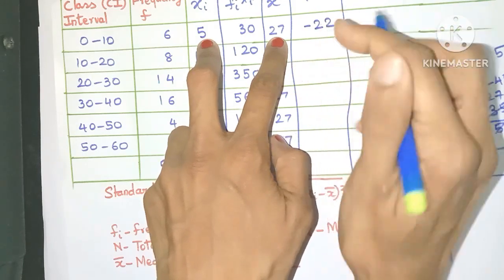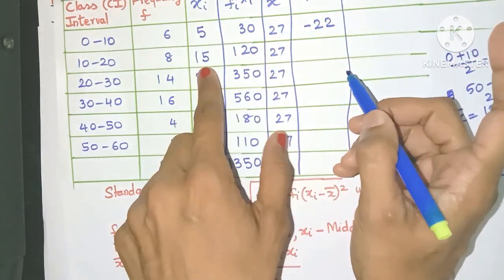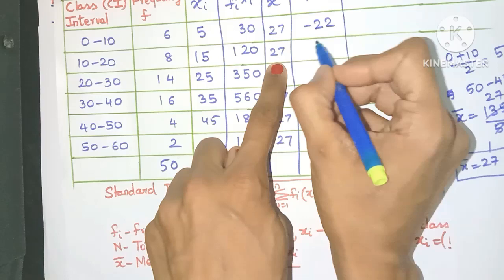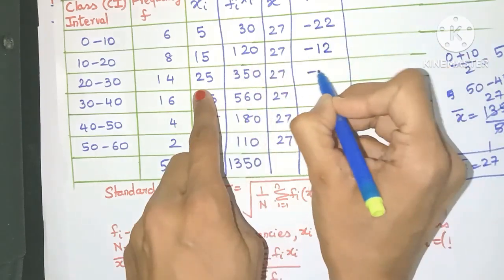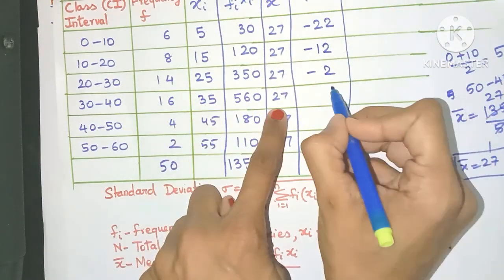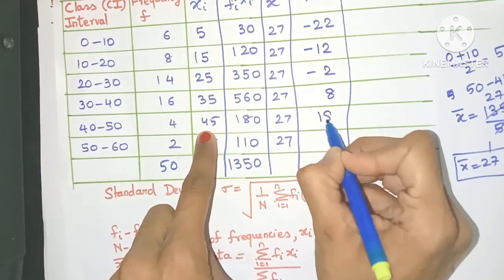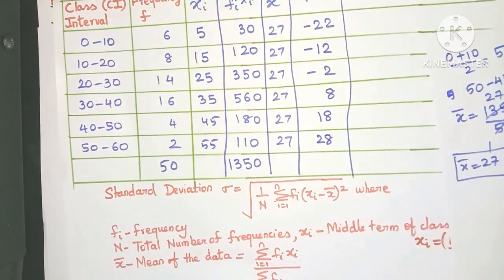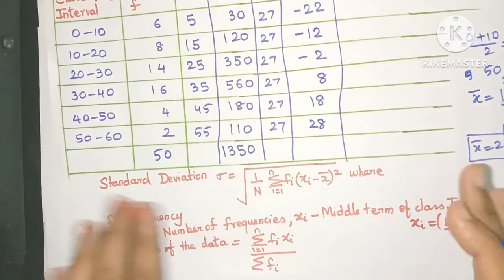So just use your fingers to help you out. So you need to do 5 minus 27. So what is it? Yes, minus 22. Remember there's a minus sign. Same way, 15 minus 27 is minus 12. Here it will be minus 2. 35 minus 27 is 8. This will be 18, and yes, this will be 28.